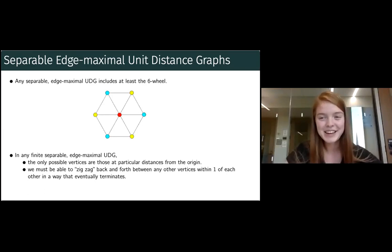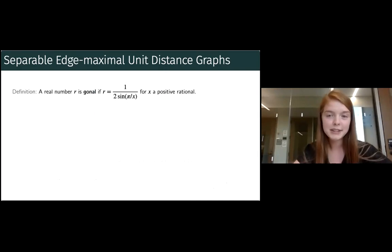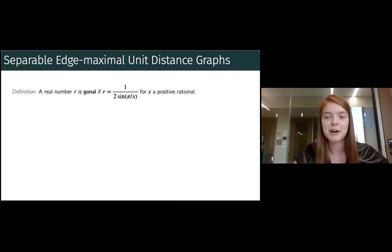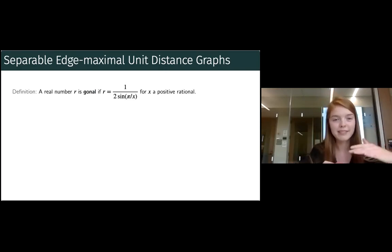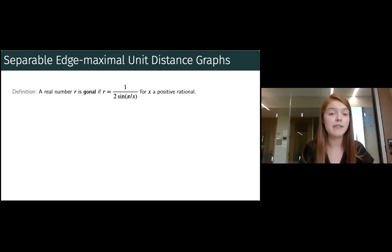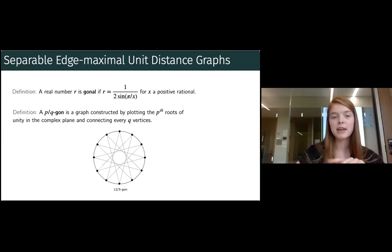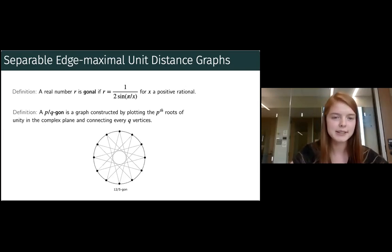Since x is defined as rational and not just an integer, this captures the case of winding number greater than one. We define the p/q-gon as a graph constructed by plotting the p roots of unity in the complex plane and connecting every q vertices — so each edge shown going across the circle is a unit distance, making this a unit distance graph. For example, the 12/5-gon is a rational polygon where the winding number is greater than one.